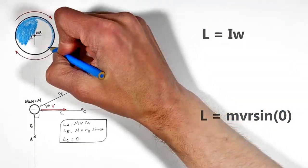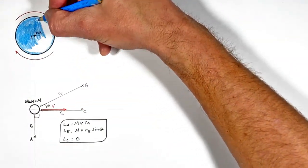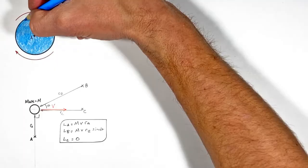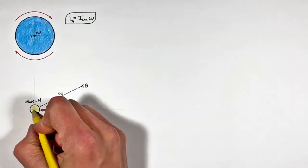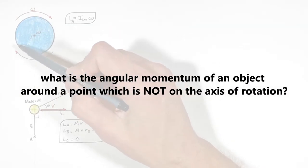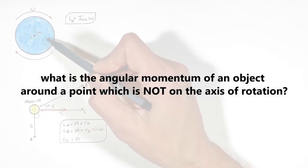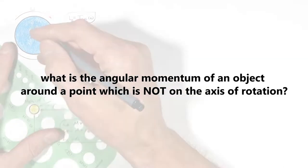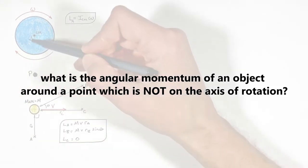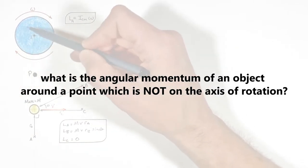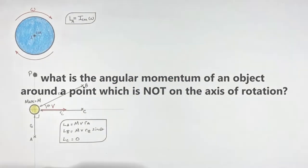Today we're going to combine these two ways of looking at angular momentum, and we're going to answer this one question: what is the angular momentum of a rotating object relative to a point which does not lie on the axis of rotation of that rotating object?